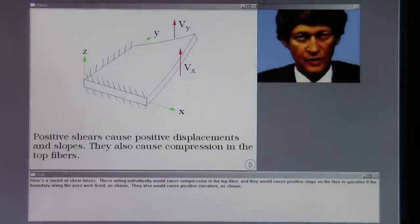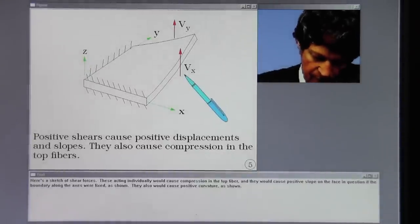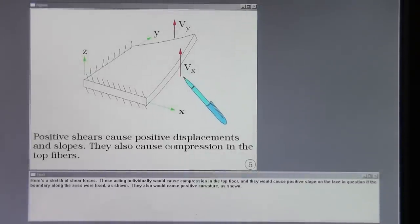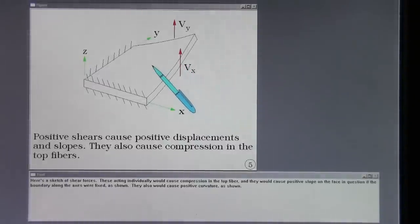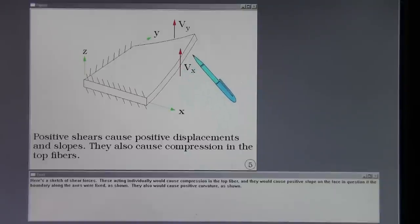Here's a sketch of shear forces. These acting individually would cause compression in the top fiber, and they would cause positive slope on the face in question, if the boundary along the axis were fixed as shown. They also would cause positive curvature as shown.